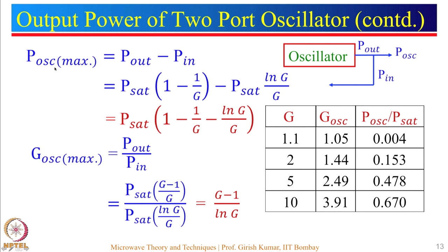Looking at P_oscillator divided by P_saturated for various gain values: if gain is just 1.1, the oscillator power output is very small — only 0.004 of P_saturated. Suppose the amplifier has a saturated value of 10 dBm; that would be extremely small. If gain is equal to 10, the oscillator output is almost two-thirds of P_saturated. For gain equal to 20, you get a larger P_oscillator. So choose an appropriate gain to maximize oscillator power output.